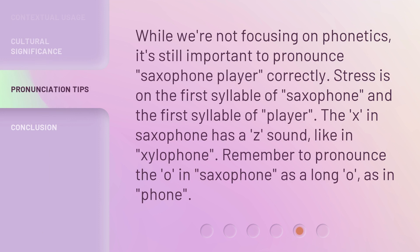While we're not focusing on phonetics, it's still important to pronounce saxophone player correctly. Stress is on the first syllable of saxophone and the first syllable of player. The X in saxophone has a Z sound, like in xylophone. Remember to pronounce the O in saxophone as a long O, as in phone.